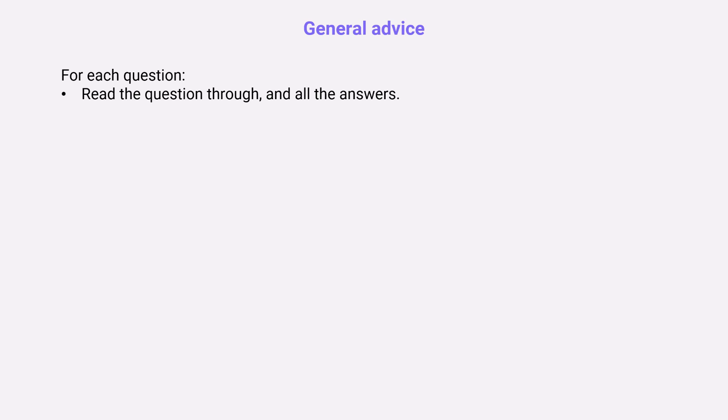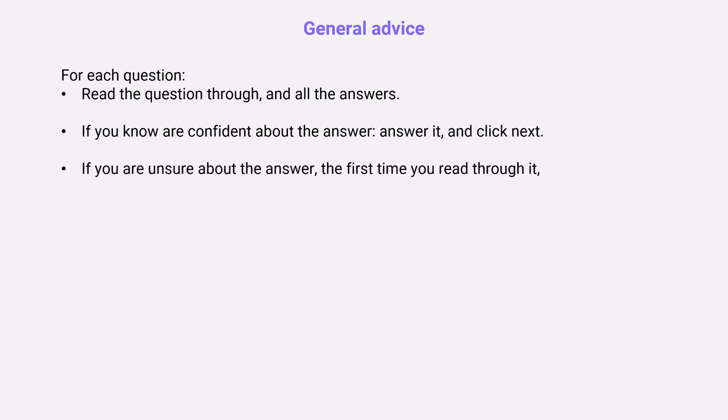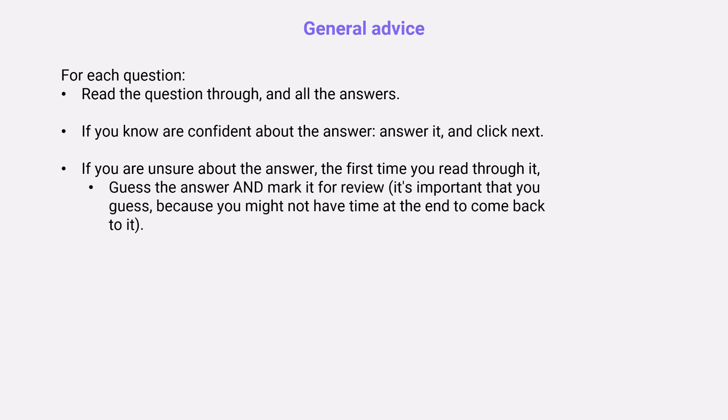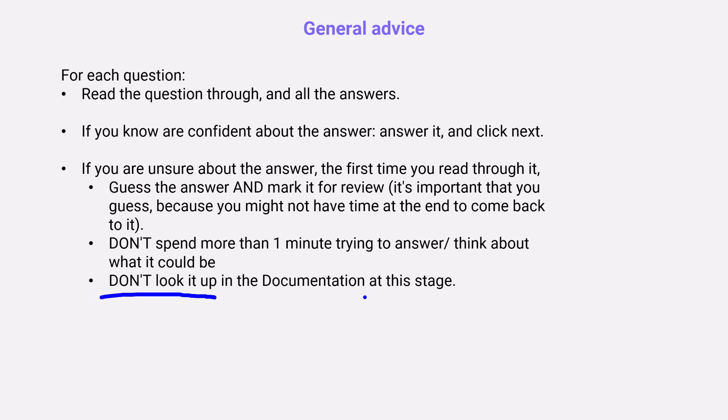As I mentioned, some general advice for each question. Read through each question and all of the answers. If you're confident about the answer, then just answer it and click next. If you're more than 90% sure, 95% sure, answer it, click next. Now if you're unsure about the answer the first time you read through it, then you need to guess the answer and mark it for review. That's what I do. It's important that you guess it because you might not have time to come back to this question. So it's better to guess it than to leave it blank because a blank answer is never going to be right. But at least a guess you have a chance and you don't get negatively marked for answers that are wrong. So you might as well guess. As I mentioned, don't spend more than one minute trying to answer or think about any of the questions, at least in that general period. Don't spend five minutes looking out the window trying to remember some specific syntax. It's just not worth it. If you're not sure, guess it, mark it for review, come back to it at the end. I would argue to not look it up in the documentation at this stage, in that general stage.